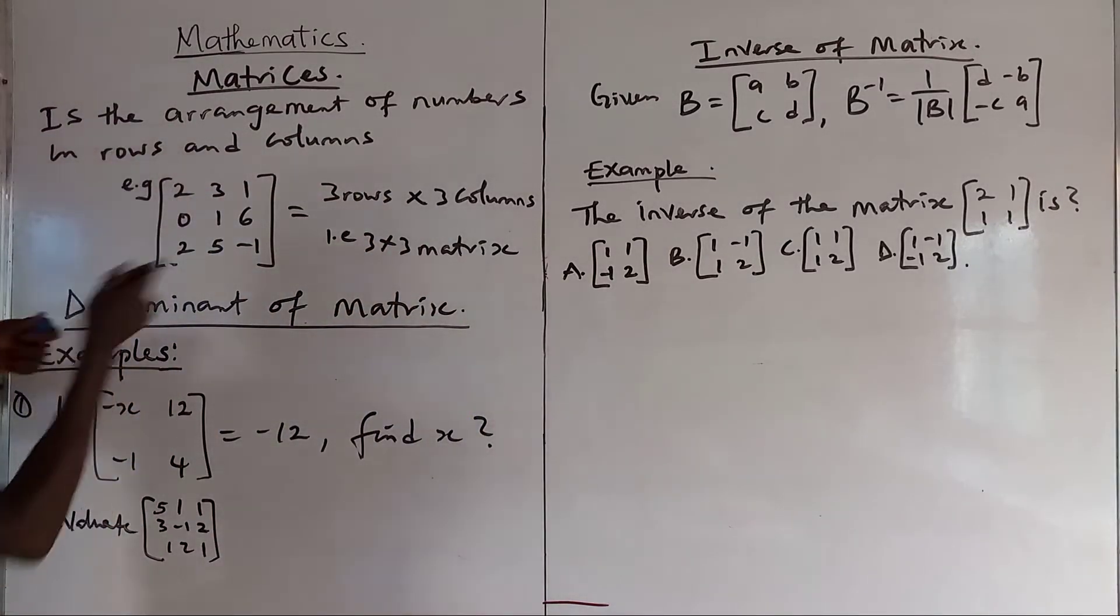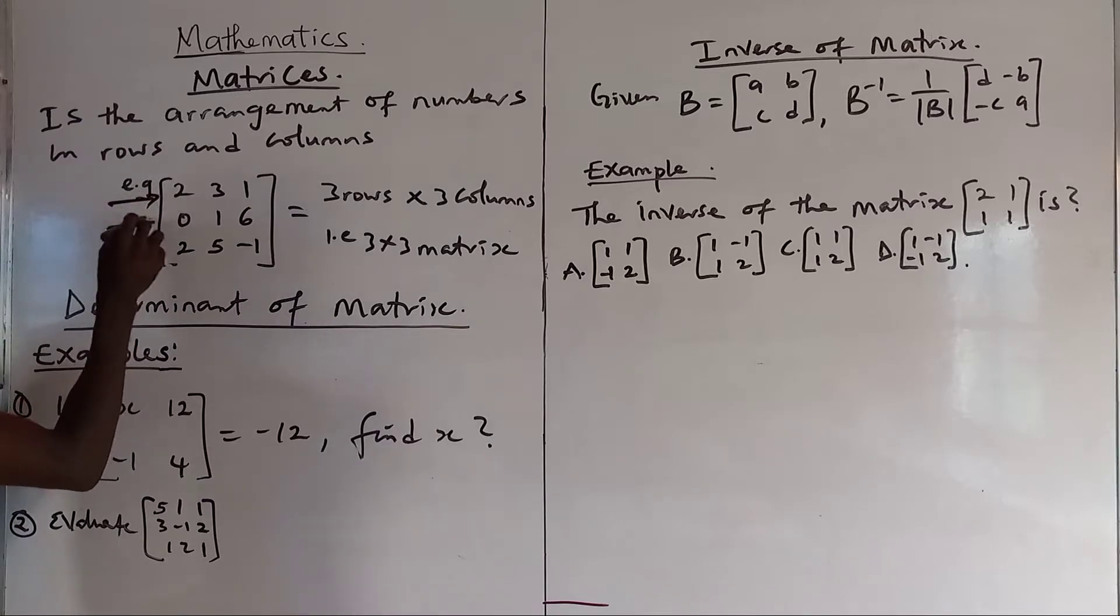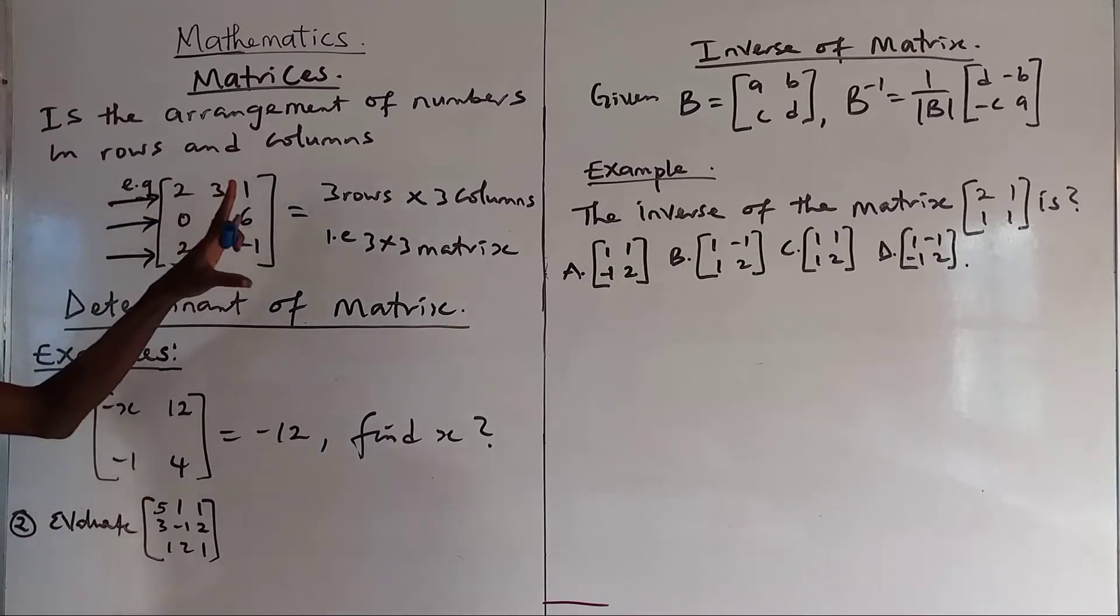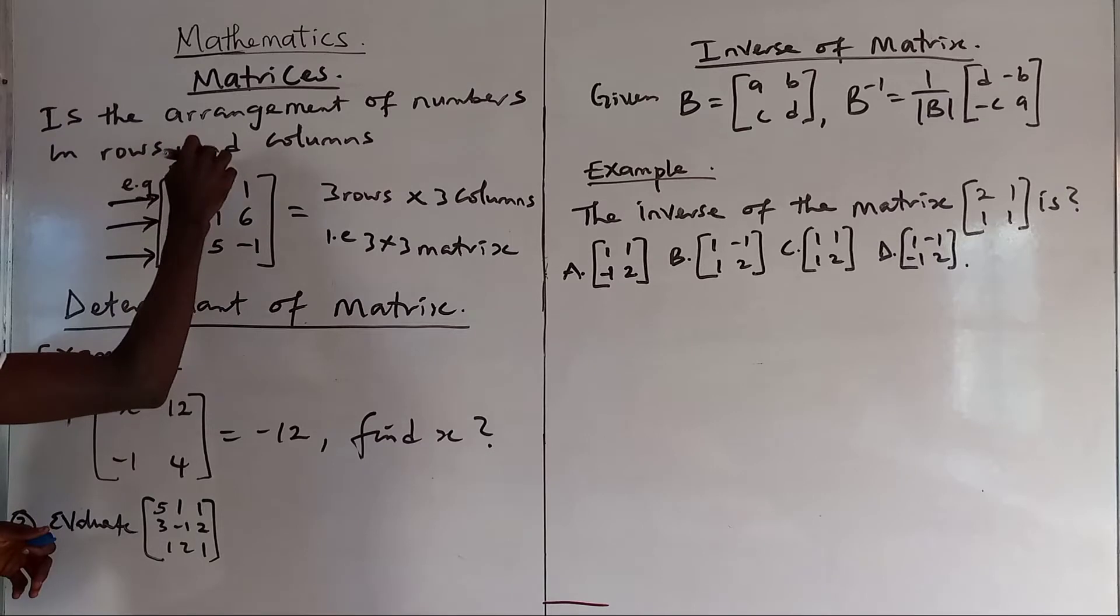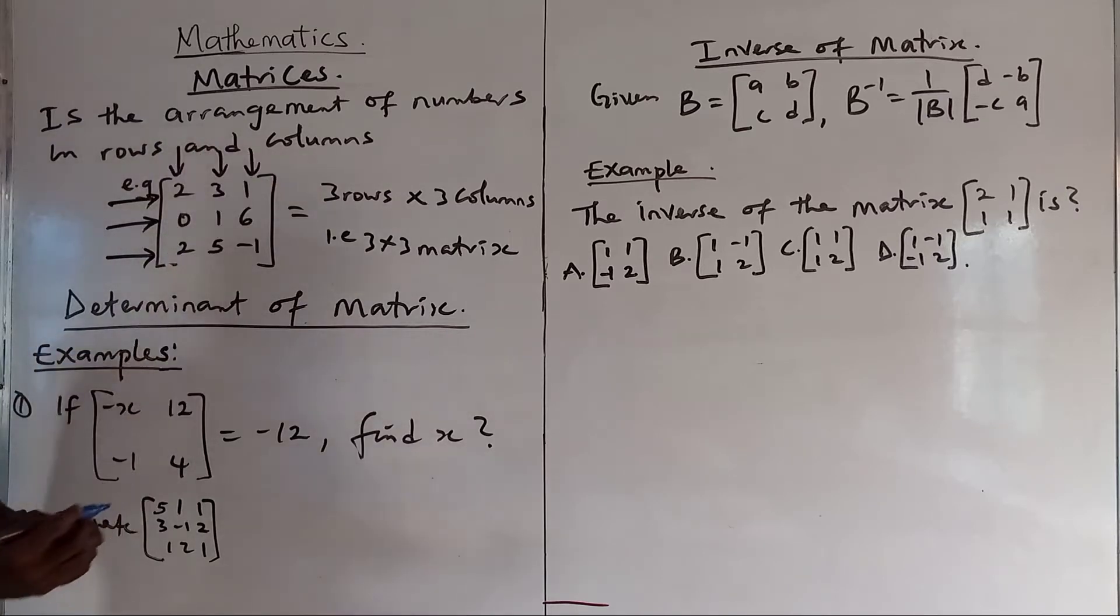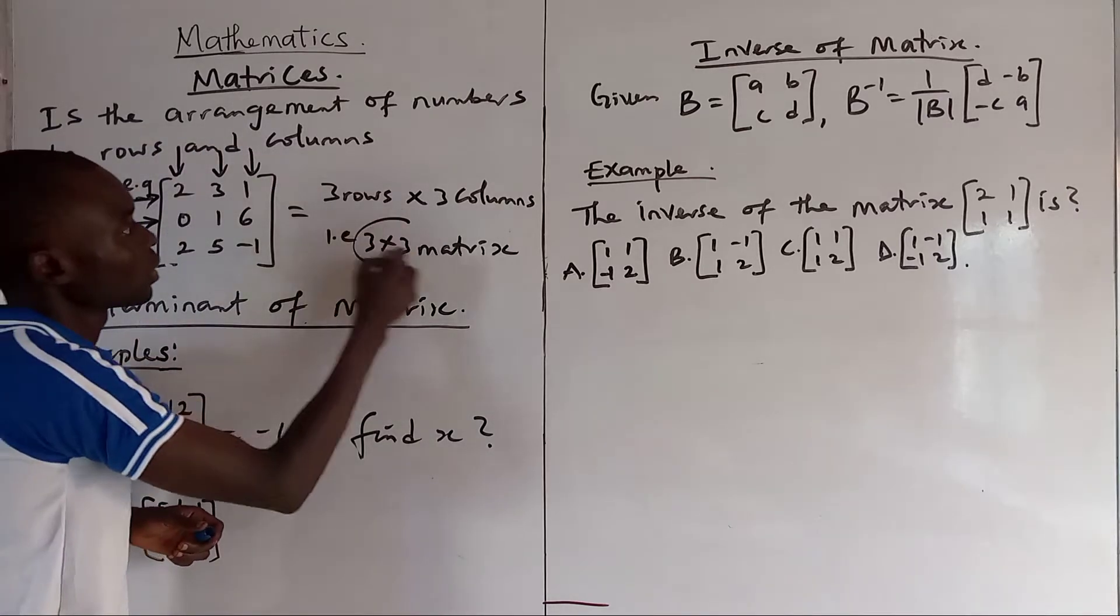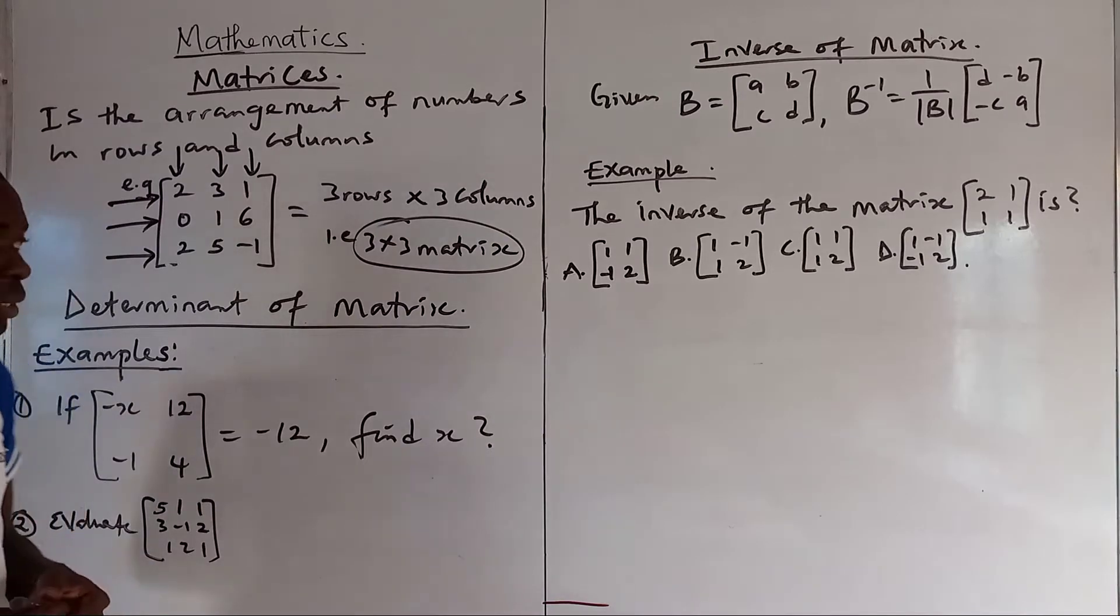For instance, look at it. This is the row: 1, 2, 3. So these are 3 rows and these are the columns: 1, 2, 3. So that means the name of this matrices is 3 by 3 matrices.